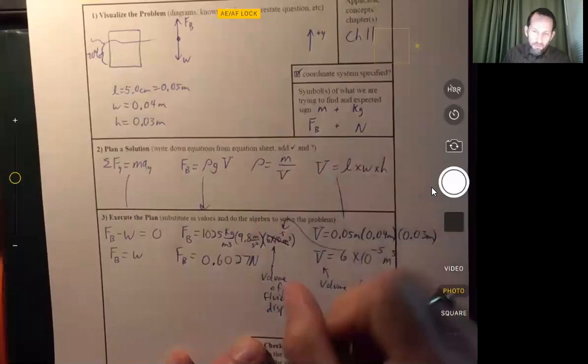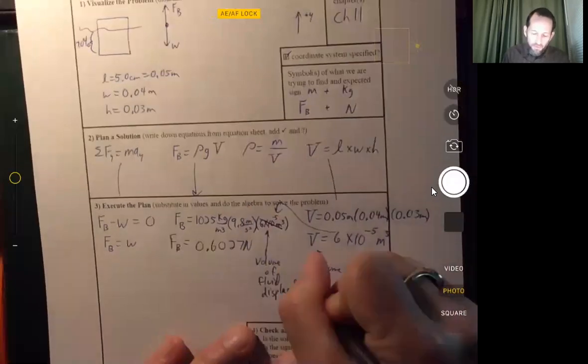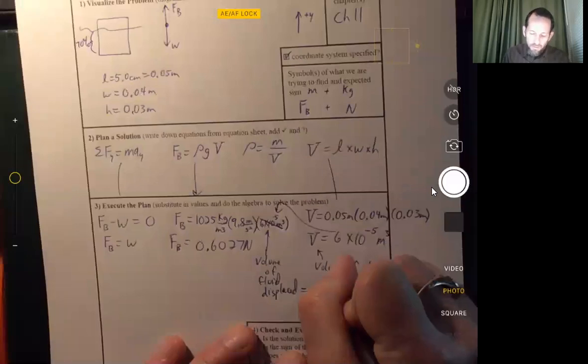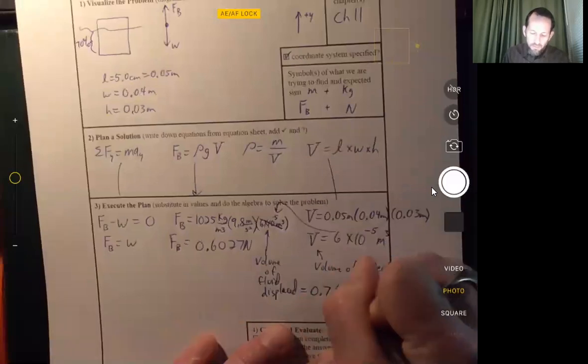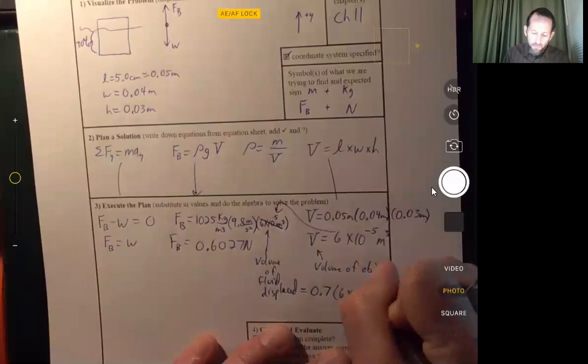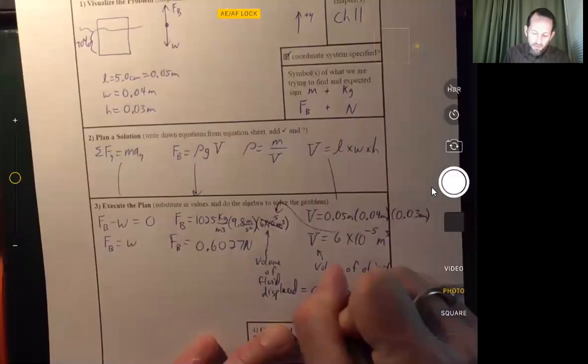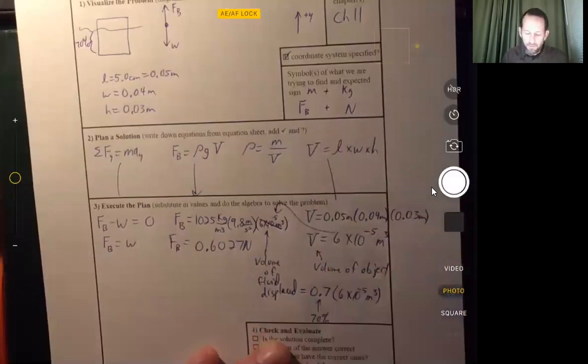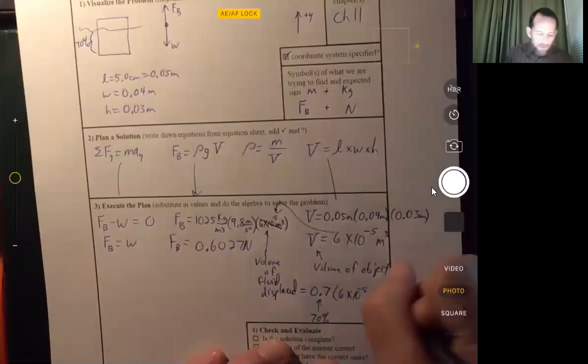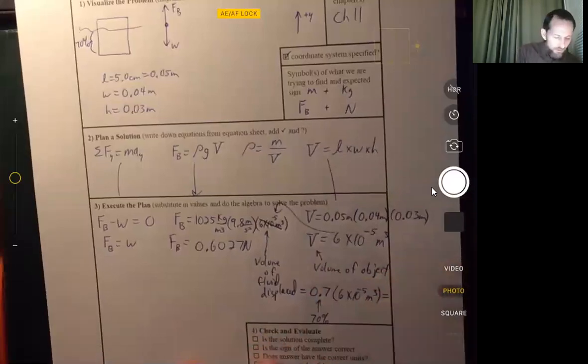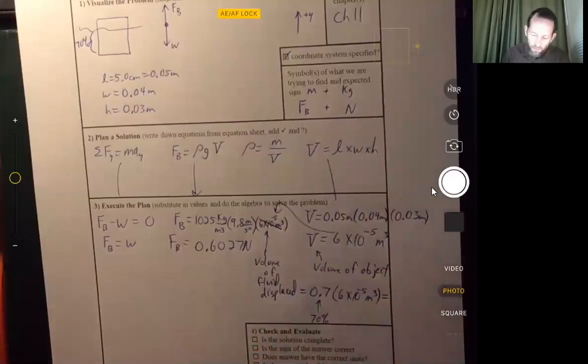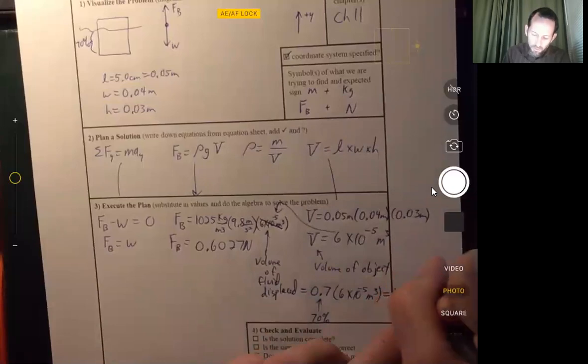So we need to say, wait a minute, volume of fluid displaced is equal to 0.7 times 6 times 10 to the minus fifth. That is based on our 0.7. That's going to be 4.2 times 10 to the minus fifth cubic meters.